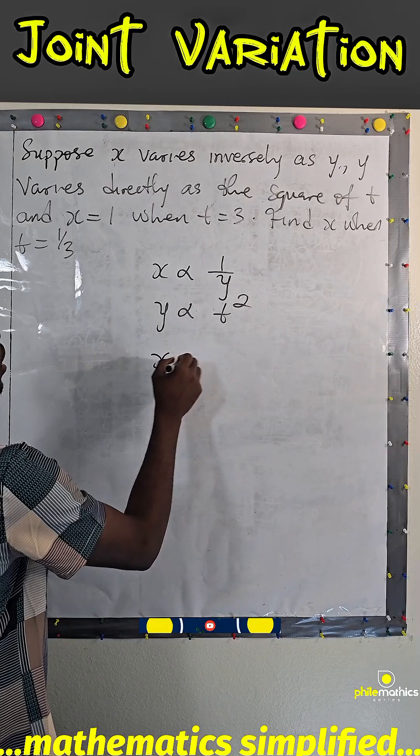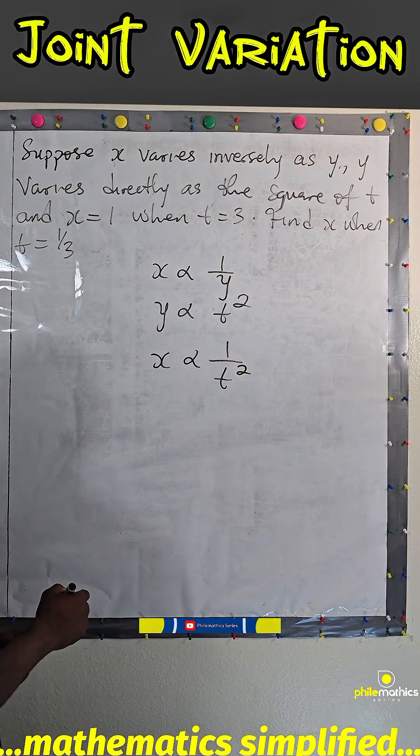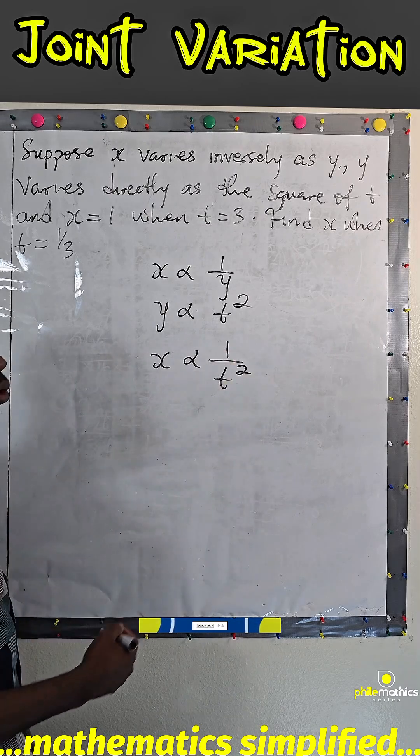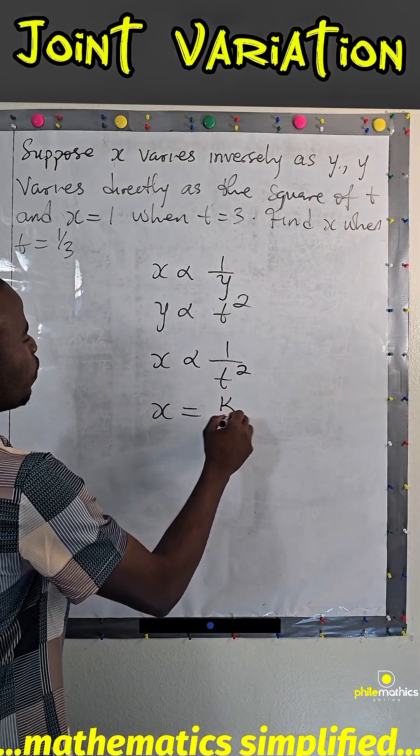So x varies inversely as the square of t. We can introduce the constant of proportionality, that means x equals k over t square.